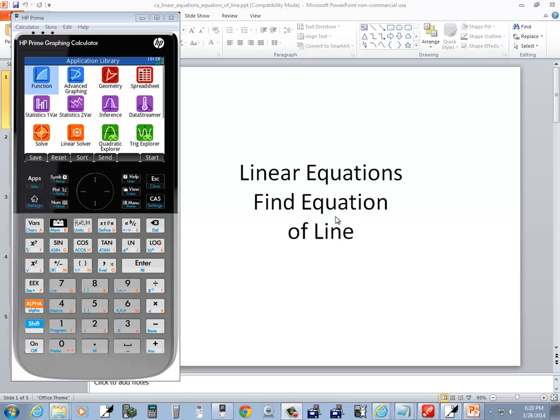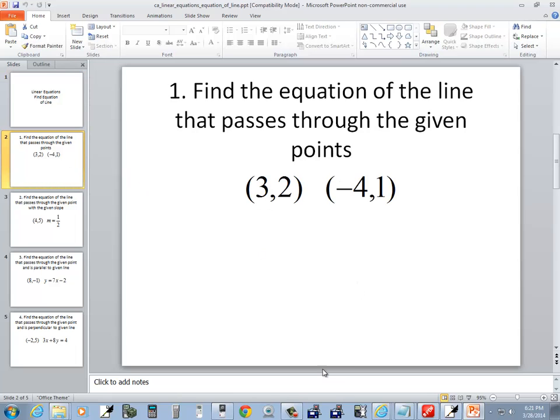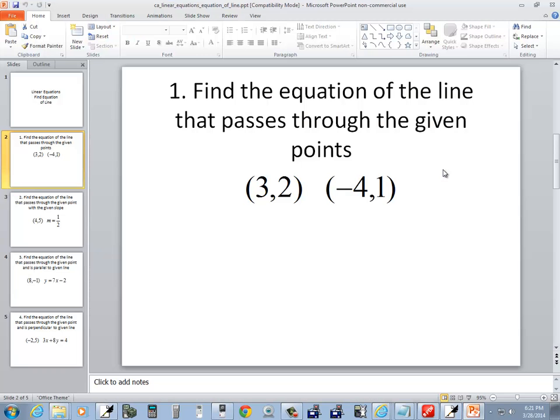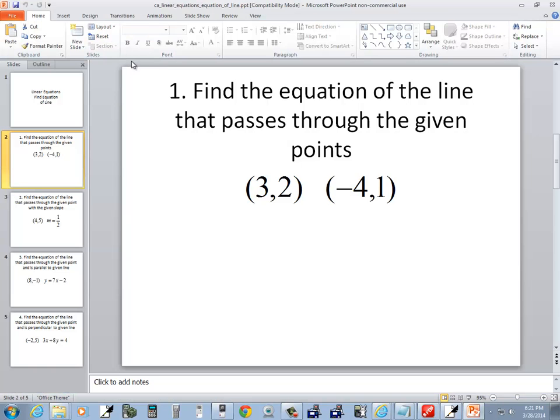Let's take a look at linear equations, find an equation of a line, and look at our first problem. We have points (3,2) and (-4,1).